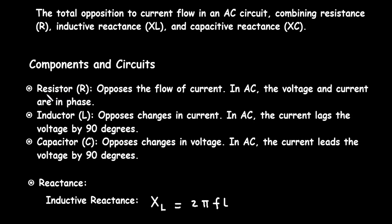Next is components of circuits. Resistor R opposes the flow of current; in AC the voltage and current are in phase. Inductor L opposes changes in current; in AC the current lags the voltage by 90 degrees. Capacitor C opposes changes in voltage; in AC the current leads the voltage by 90 degrees.